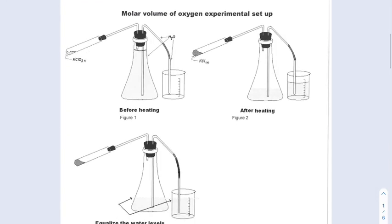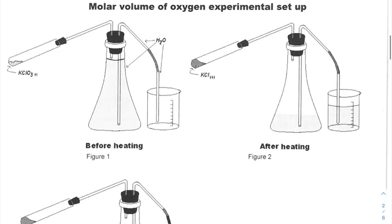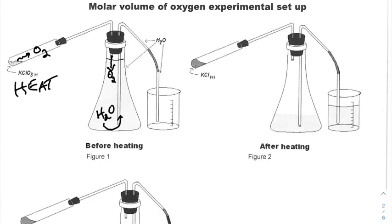As I showed you last time, we're going to use this setup here. Once we set it up, we'll have a closed system. As we heat the potassium chlorate mixture, it's going to start decomposing and producing oxygen gas, which is going to move through this tubing and exit into the flask that's filled with water. The space occupied by the oxygen is going to cause the water to get displaced, and it will come up out of this delivery tube here.